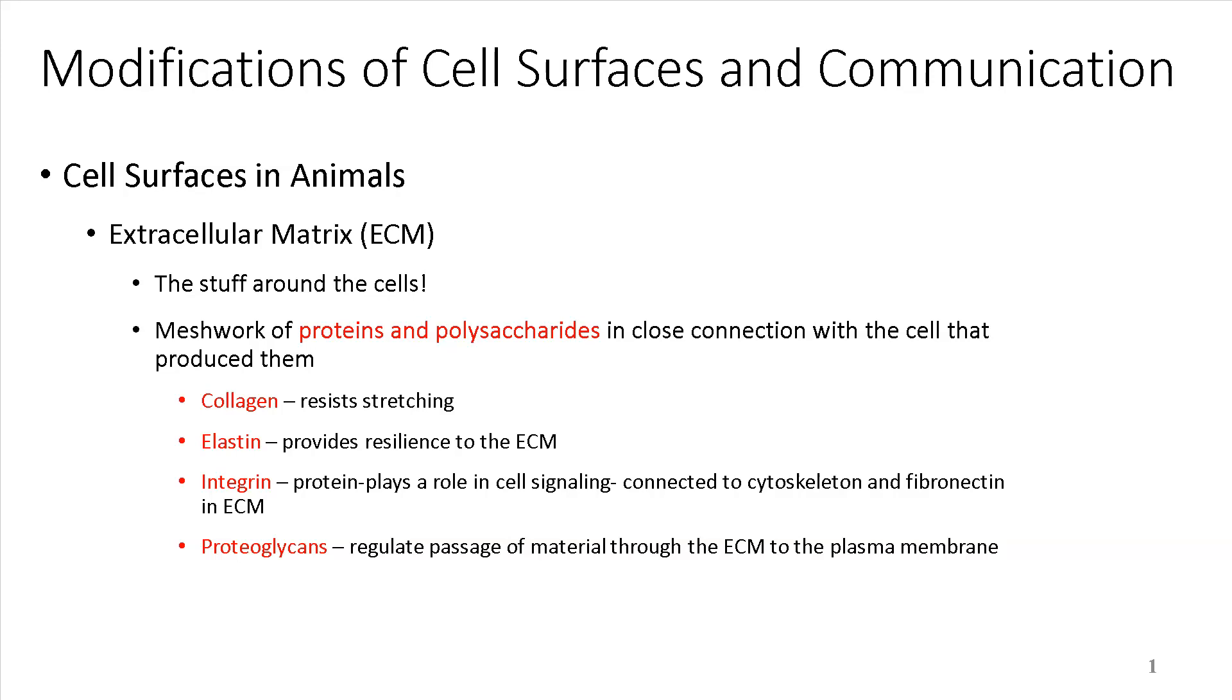So cell surfaces, we've been talking about the plasma membrane, fluid mosaic model, active and passive transport. And so the last section is all about some anatomy and also cell signaling. There is something called the extracellular matrix in cells. So it's the stuff around cells. It's a meshwork of proteins and polysaccharides, sugars, in close connection with the cell that produce them.